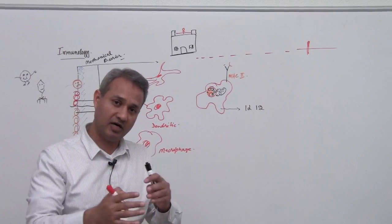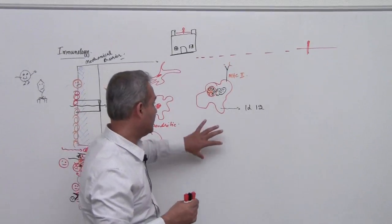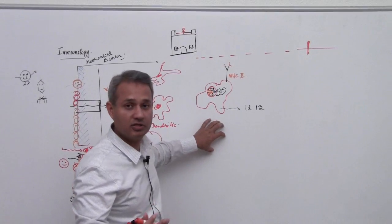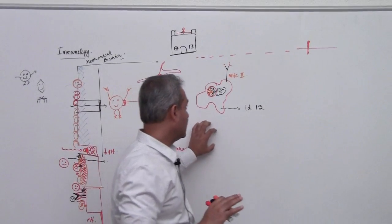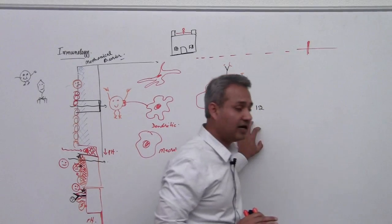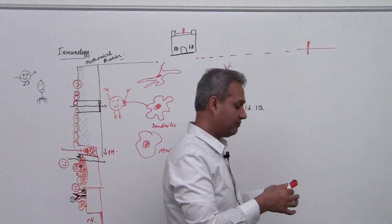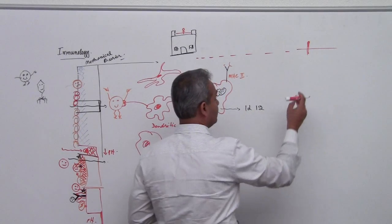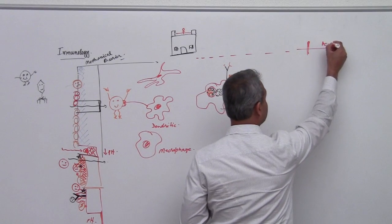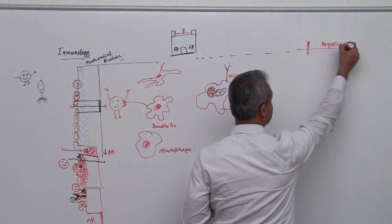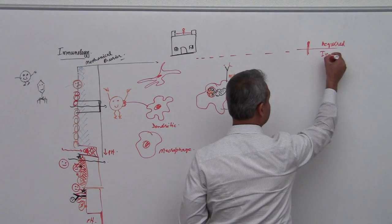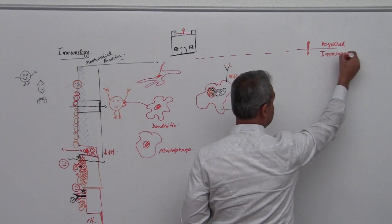We will talk more about various arms and how they work. At this time, this is the innate response. We will talk more. Then, this IL-12, it acts on a set of cells which are called acquired immune system.